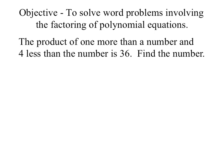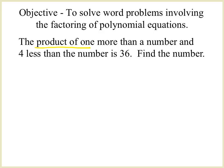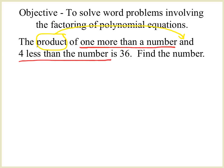Here's the equation. The first operation I see is a product, so I'm going to send that over to the AND sign. What comes right after that? One more than a number. What comes after that? Four less than a number. Then I have an IS, and then I have 36.